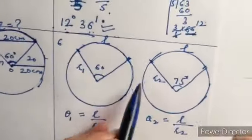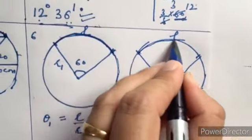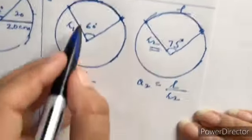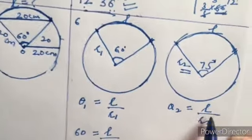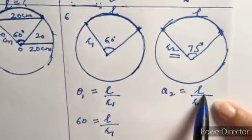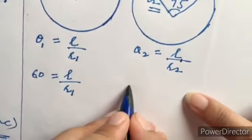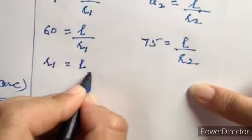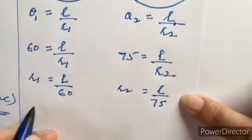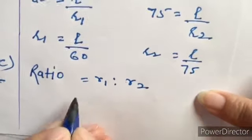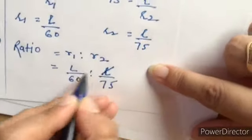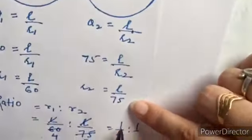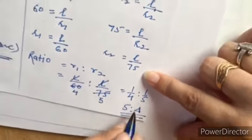Question number six: two circles have the same length of arc L. The first angle is 60 degrees and the second is 75 degrees. We need to find the ratio of R1 to R2. Using theta = L/r: theta1 = L/R1 gives 60 = L/R1, and theta2 = L/R2 gives 75 = L/R2. Since L is the same in both cases, we get R1/R2 = 60/75. After simplification, R1:R2 equals 4:5, so R2:R1 is 5:4.